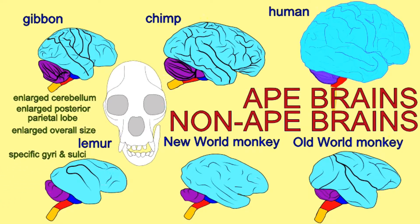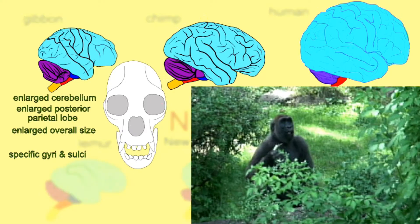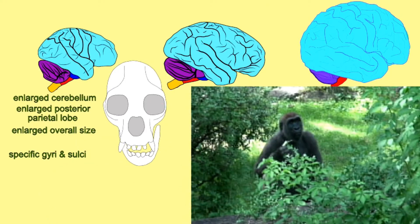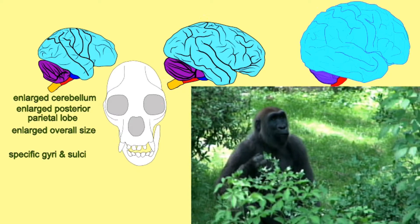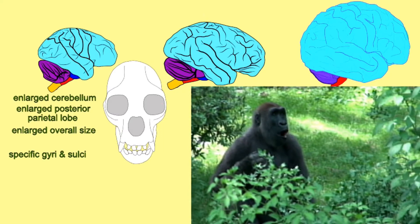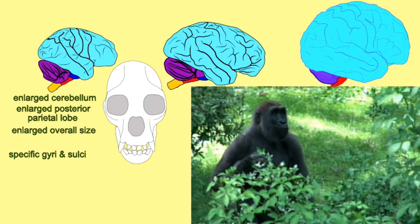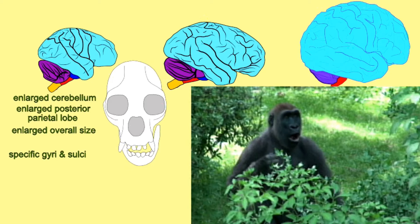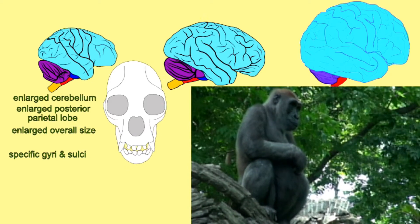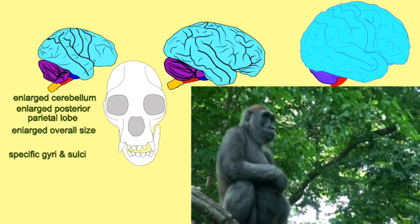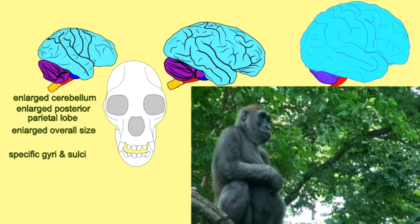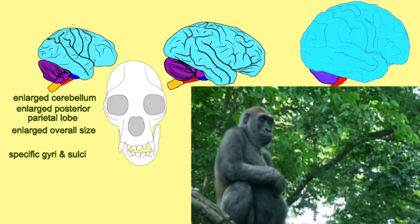Ancestral apes enlarged the brain in specific regions, developed specific gyral cells shared by humans, and developed a number of behaviors not yet known in monkeys, such as the ability to recognize self in the mirror and the ability to learn sign language.